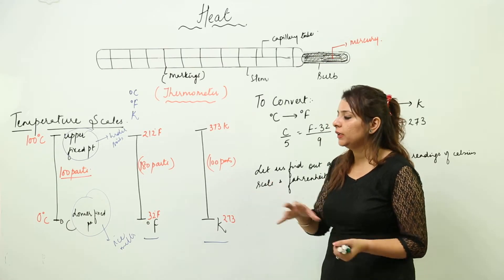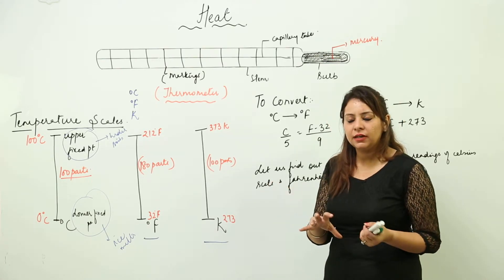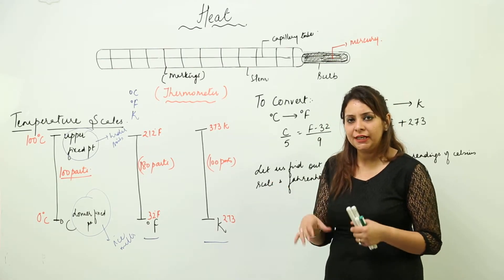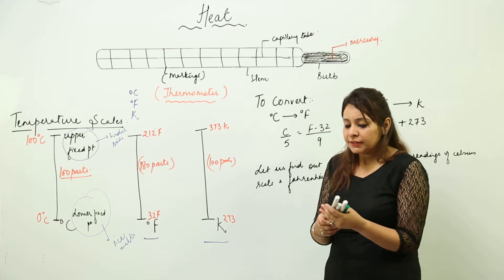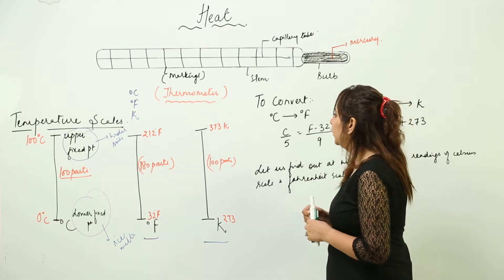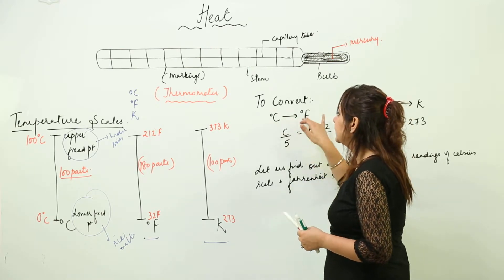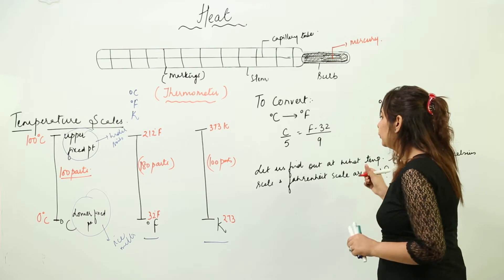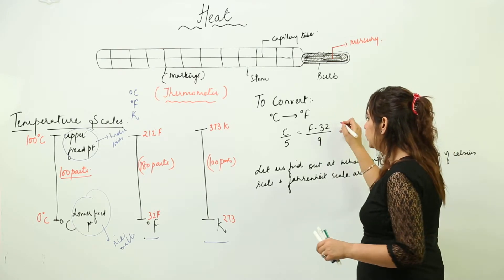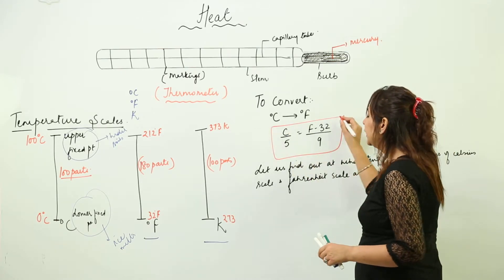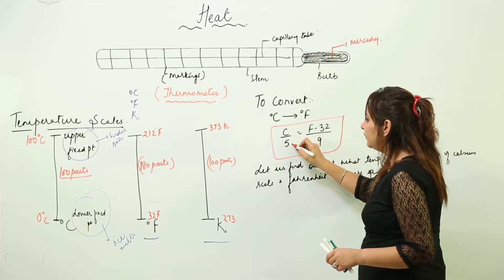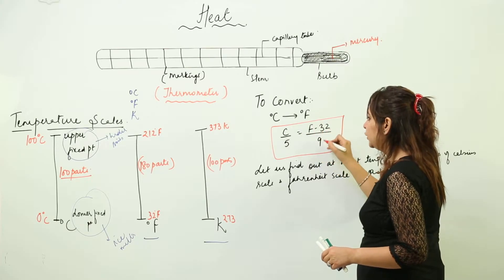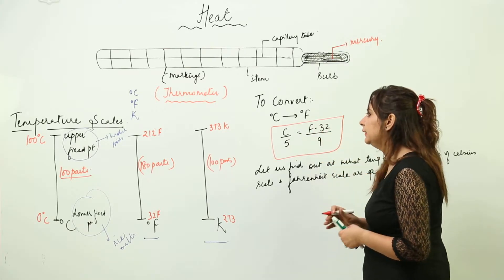We can convert temperature from one scale to another. Suppose you wish to convert degree Celsius into Fahrenheit — the formula you will use is: C/5 = (F − 32)/9.